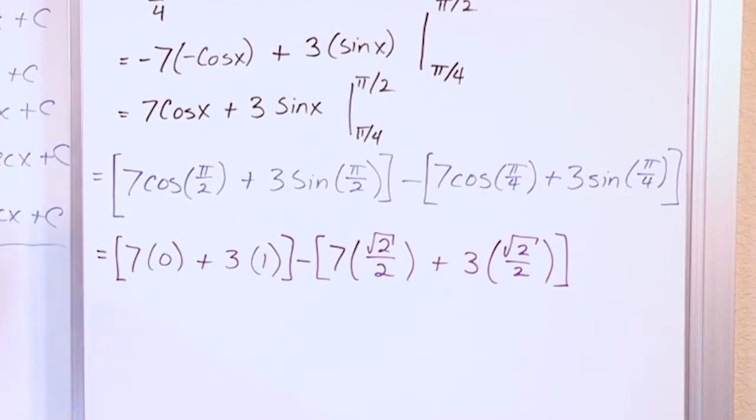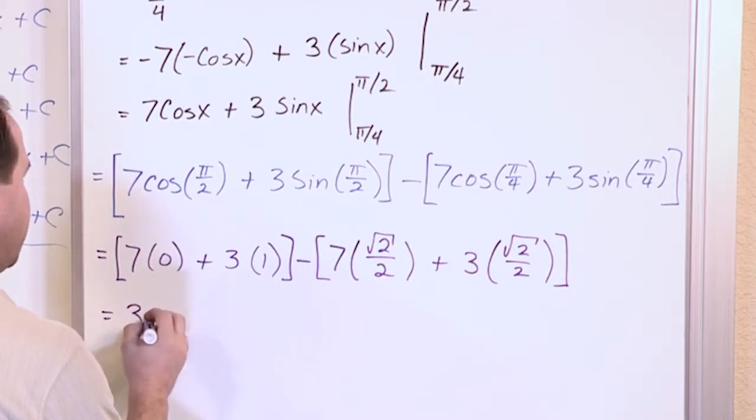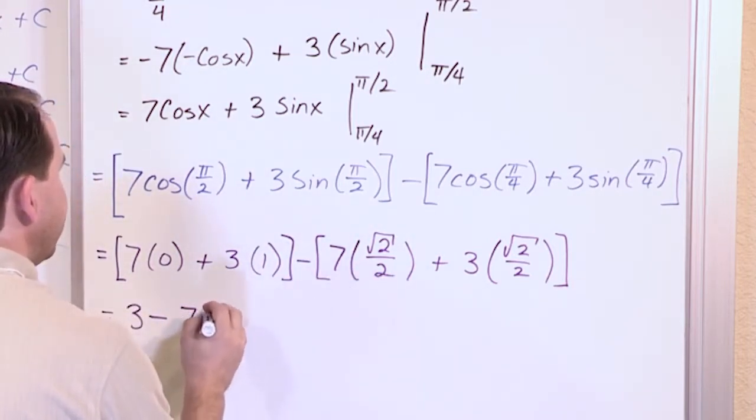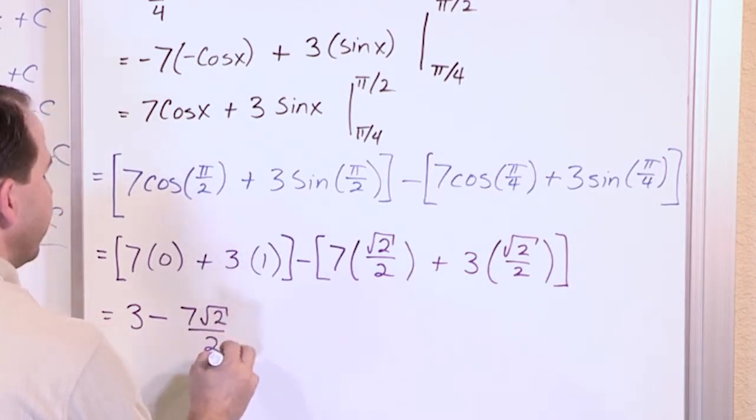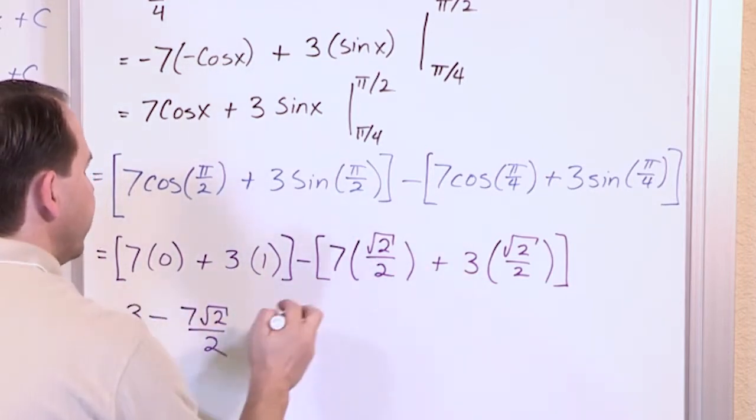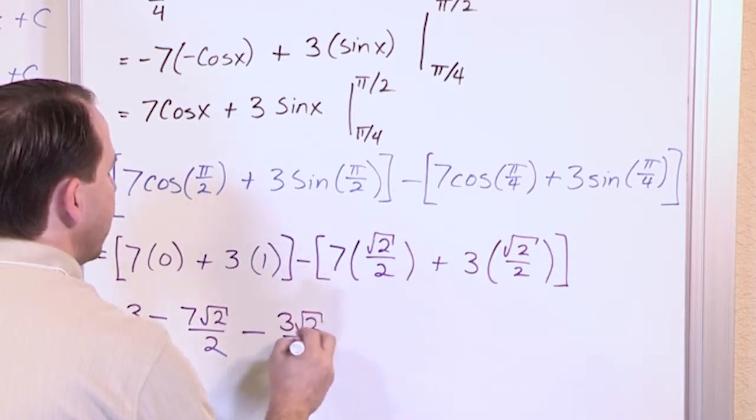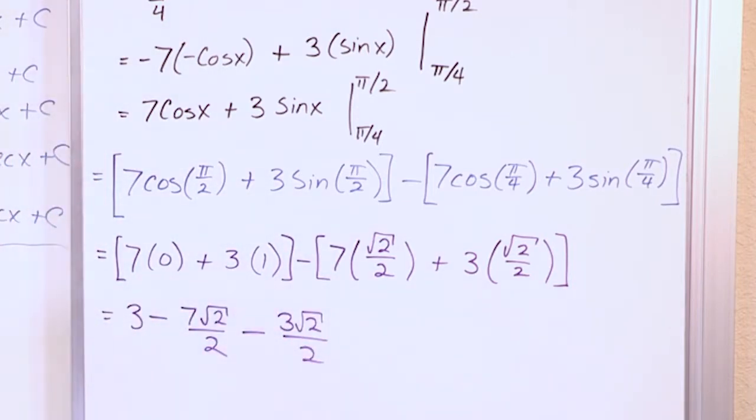So what we have here, we get a big fat 0 here, but this is a positive 3. So what we really have is 3 minus this guy. When you multiply that in, it's just going to be 7 times the square root of 2 over 2. This minus sign goes into there, giving you a negative 3 times the square root of 2 over 2.